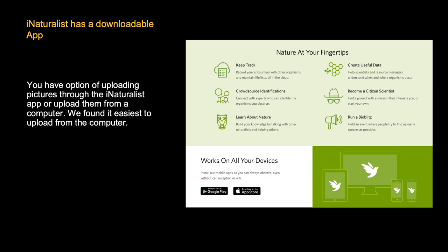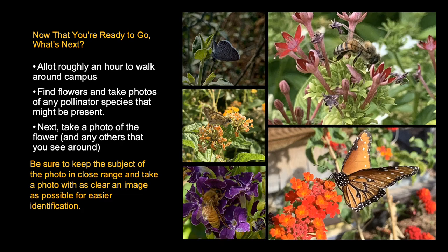iNaturalist does have an app that you can download onto your phone, and then you can upload your photos directly into the app. Now that you have set up a SciStarter and iNaturalist account, grab your mask and camera and head to your nearest campus. You'll want to dedicate at least an hour to collecting observations — either walk around campus and take photos of pollinators and flowers, or find a garden and camp out for an hour to take photos of all pollinators that visit the flowers.